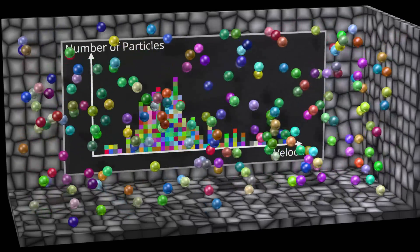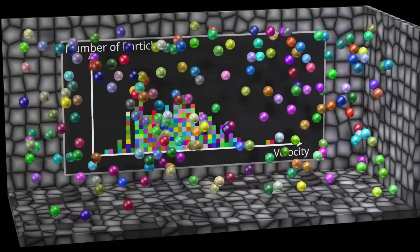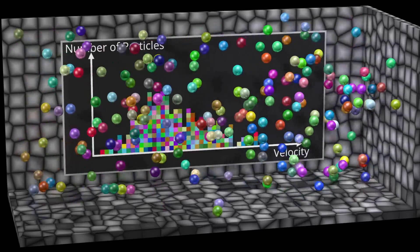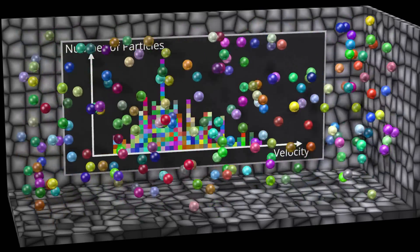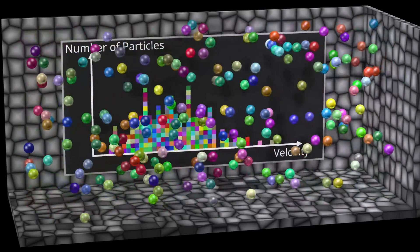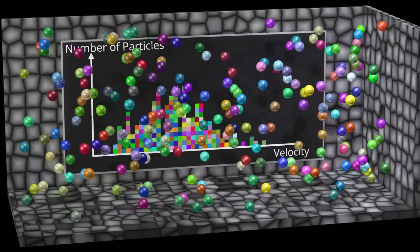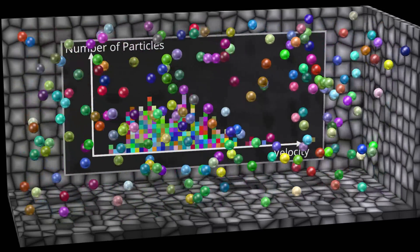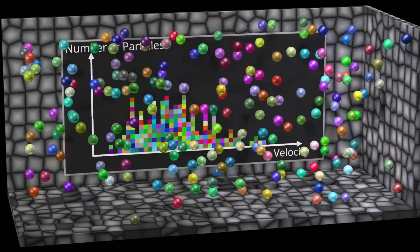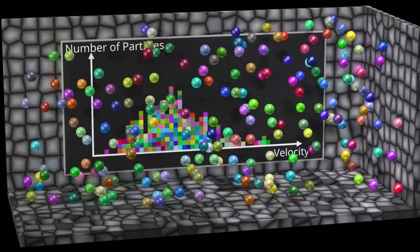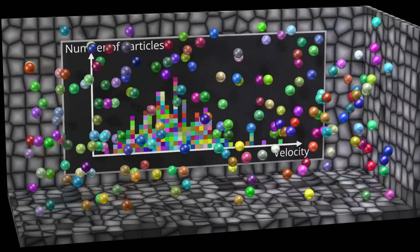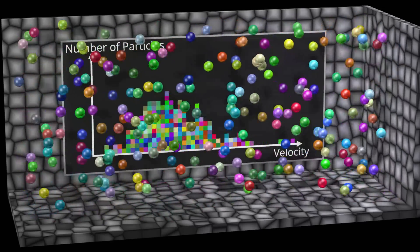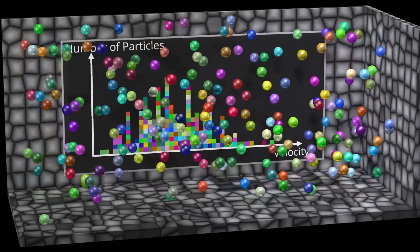Entropy is a measure of how many different ways something can occur. There are only a small number of ways in which all the energy can be given to only a few particles, and hence the situation at the beginning had a smaller entropy. There is a much larger number of ways in which the energy can be dispersed as shown, and hence this situation has a higher entropy.